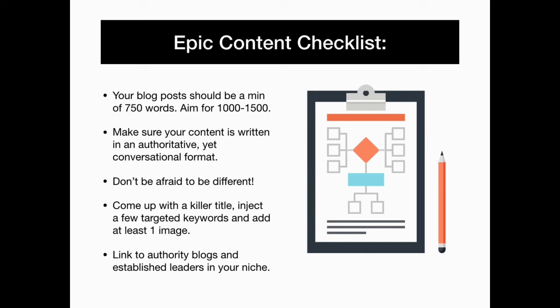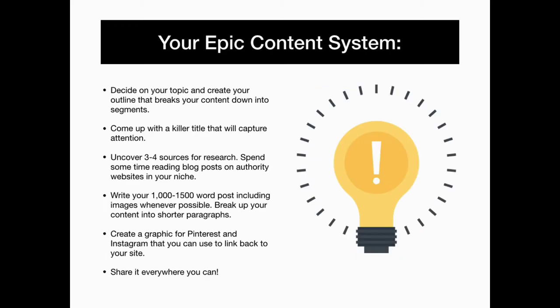Here is your epic content checklist: your blog post should be a minimum of 750 words — aim for 1,000 to 1,500. Make sure your content is written in an authoritative yet conversational format. Come up with a killer title, inject a few targeted keywords, and add in at least one image. Link to authority blogs and established leaders in your niche. For your epic content system: decide on your topic and create your outline, come up with a killer title, uncover three or four research sources, write a 1,500-word post with images, break up content into shorter paragraphs, create a graphic for Pinterest and Instagram to link back to your website, and share it everywhere you can.